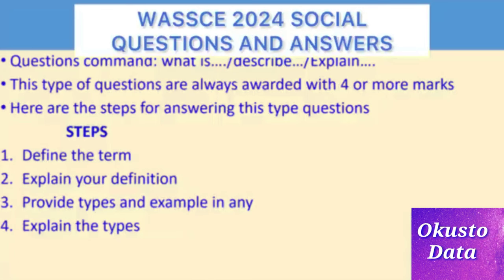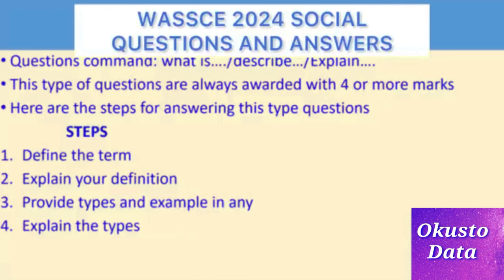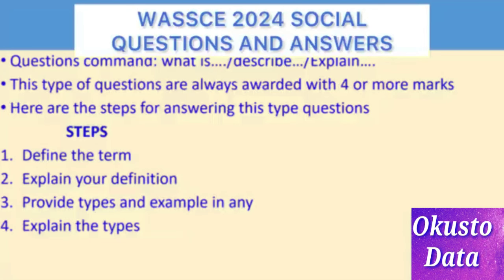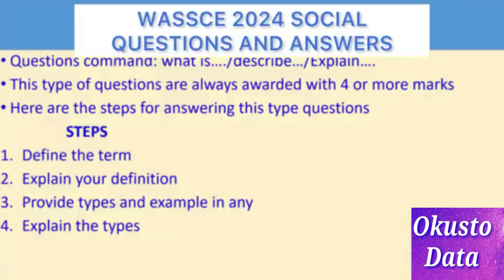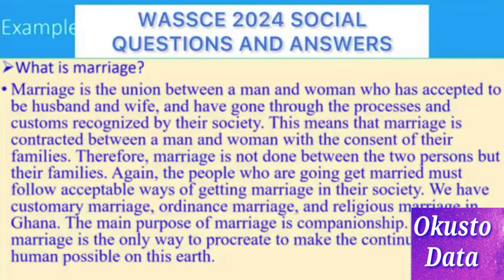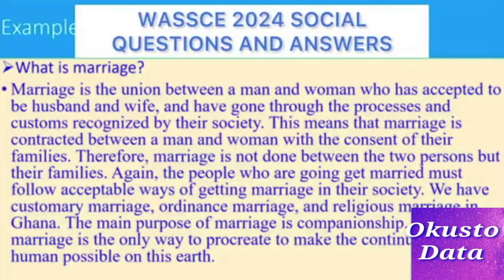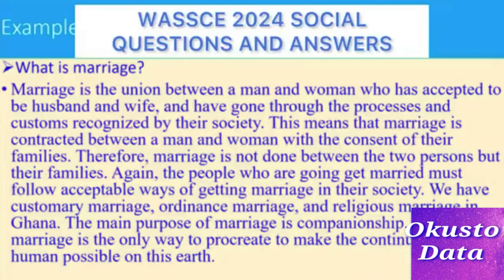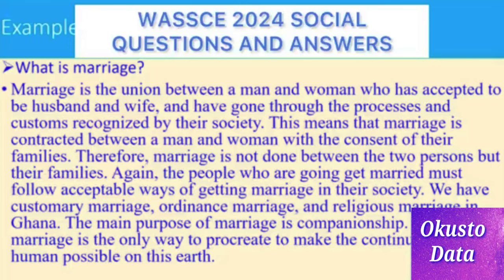Questions which use command words like 'what is,' 'describe,' or 'explain' are always awarded four or more marks. Here are the steps to answer them: 1. Define the term. 2. Explain your definition. 3. Provide types and examples, then explain the types. For example, if they ask 'What is marriage?' you can say: marriage is the union between a man and a woman who was accepted to be husband and wife and have gone through the process and customs recognized by their society — that's the definition.